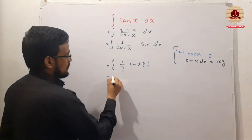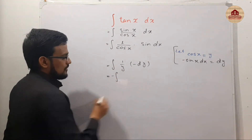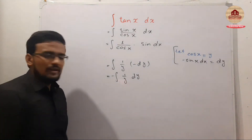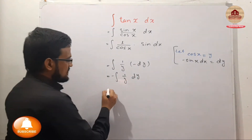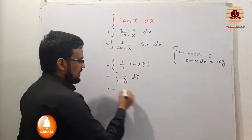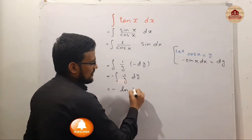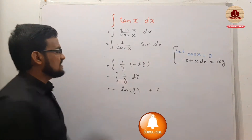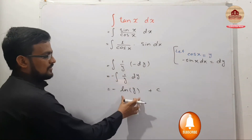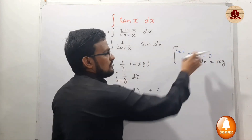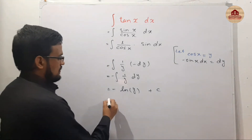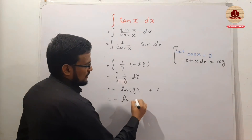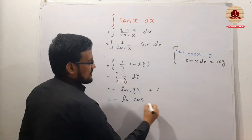So the integral becomes 1 over y, and the integral of 1 over y is natural log of y plus C, where C is a constant. Substituting back, y = cos(x), we get minus natural log of cos(x) plus C.